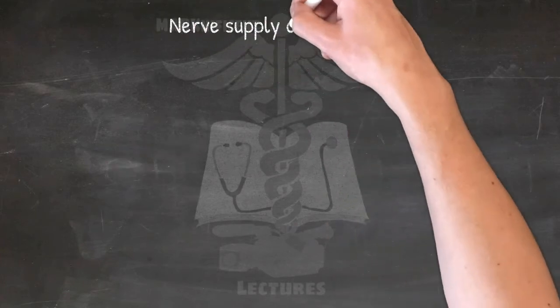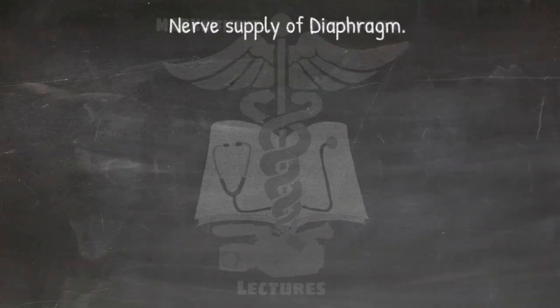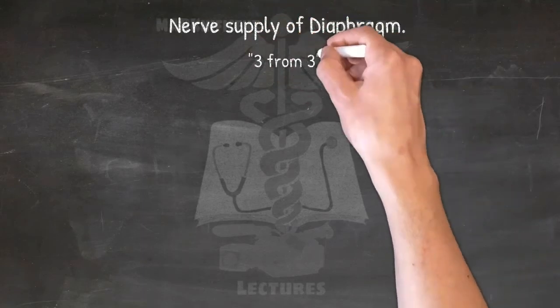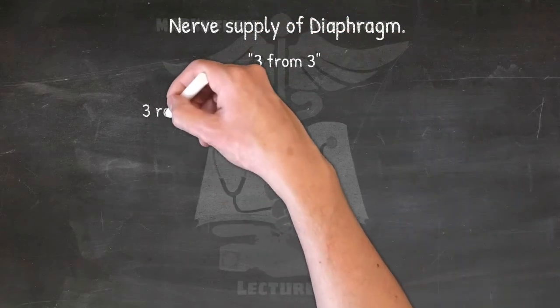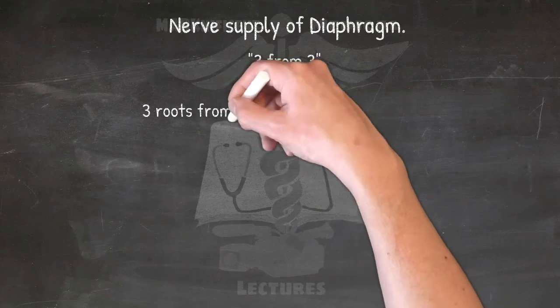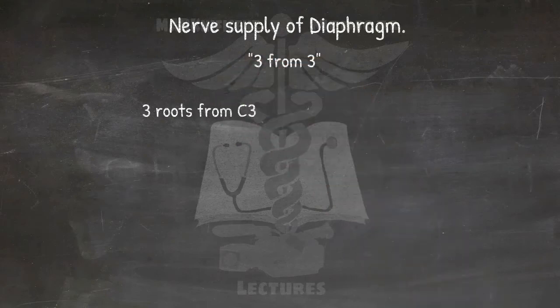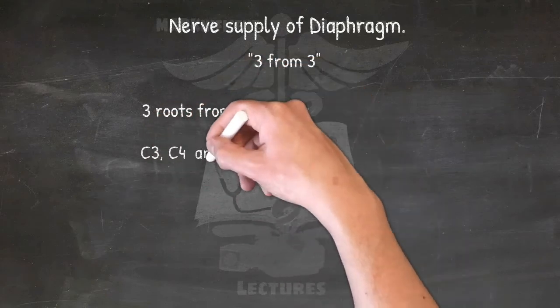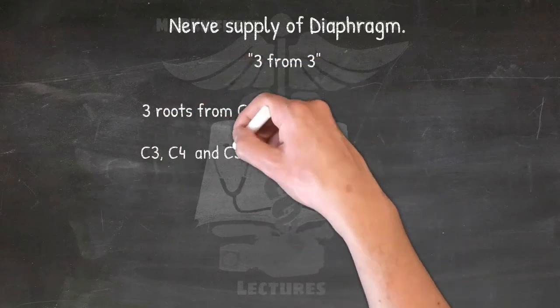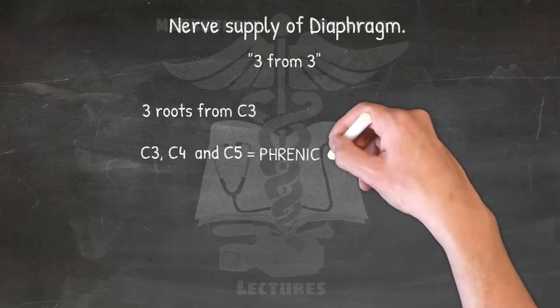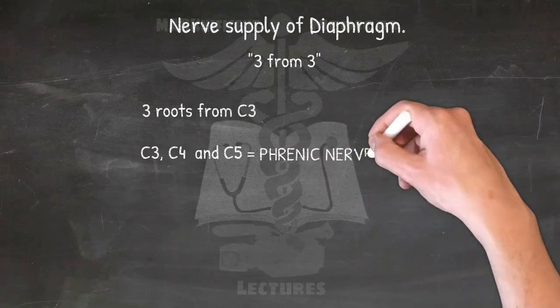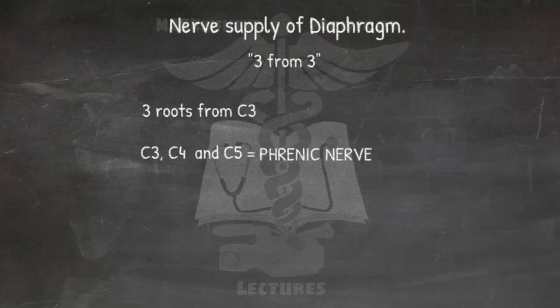For the nerve supply of the diaphragm, use: 'Three from three inches' — think three roots from C3, C4 (which is dominant), and C5. These nerve roots unite to form the phrenic nerve, which innervates the diaphragm. Damage to the phrenic nerve will thus lead to diaphragmatic paralysis.